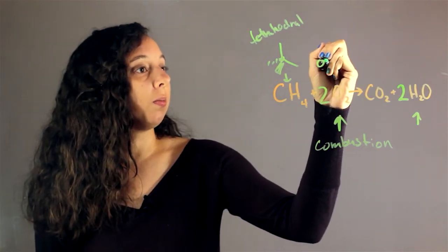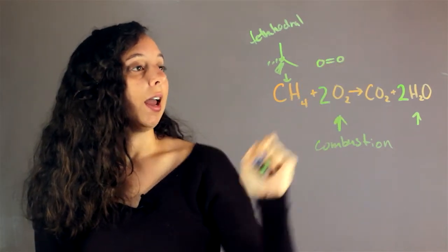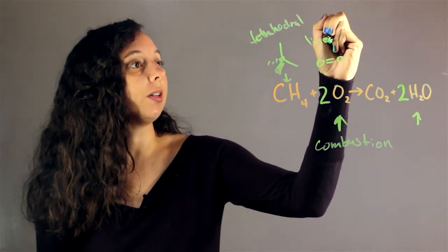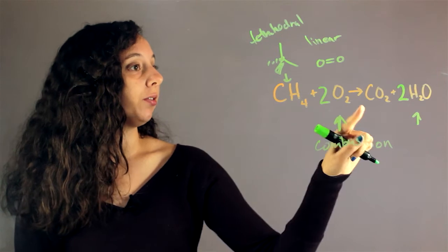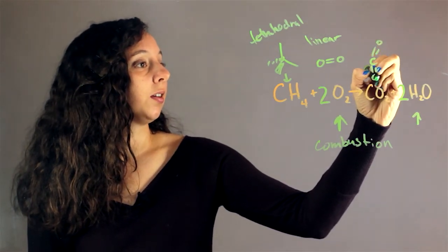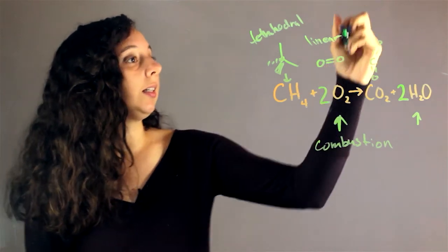O2 is going to be bonded like this and is actually linear. If it only has two things it has to be linear. CO2 bonds like this and is also completely linear.